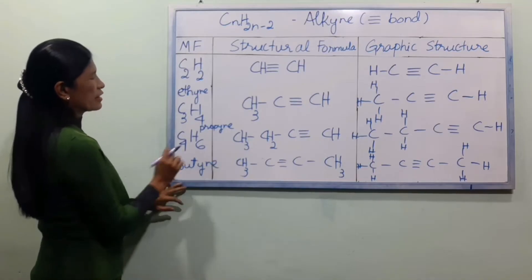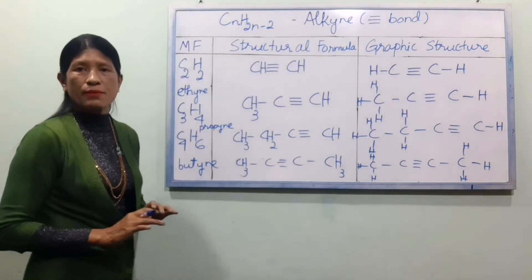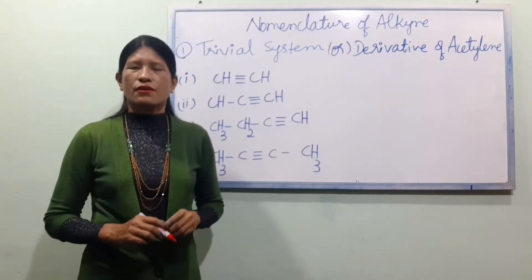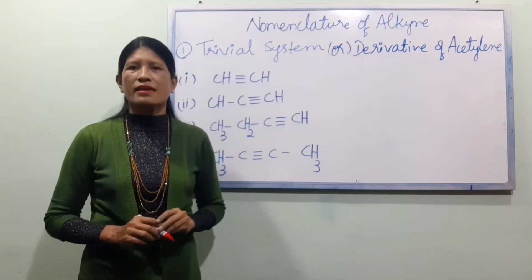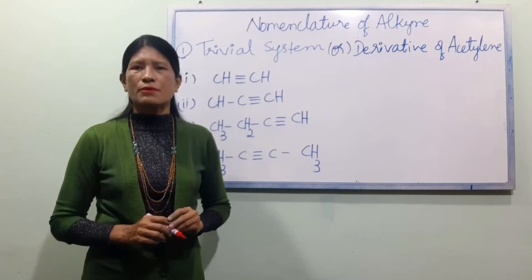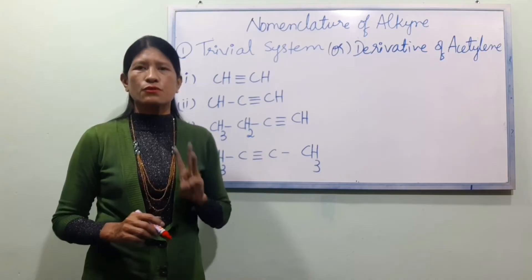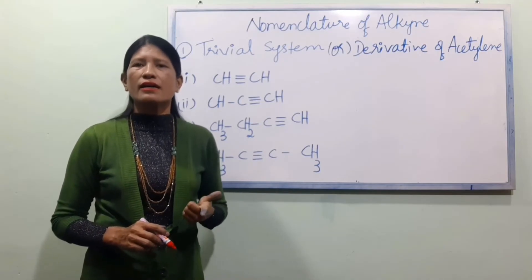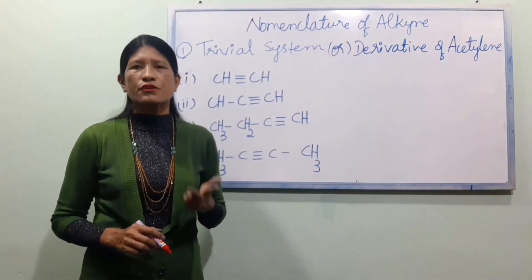So let's look at the naming system. We have a single bond LK and a double bond LK compound. The naming system includes the trivial system, the derivative system, and the IUPAC system.